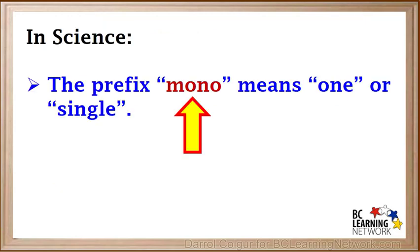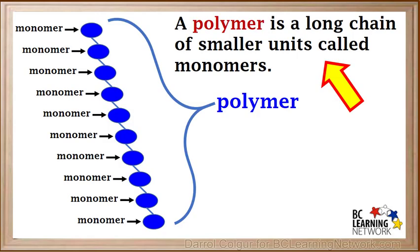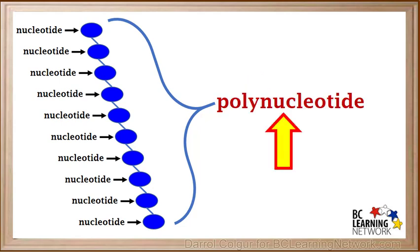In science, the prefix mono means one or single, and the prefix poly means more than one or many. A polymer is a long chain of smaller chemical units called monomers. The polymer shown here is made up of ten monomers, but polymers can consist of thousands or even millions of monomers. In biology, polymers consisting of monomers called nucleotides are very important. These are called polynucleotides.